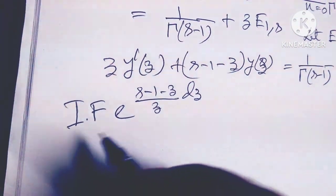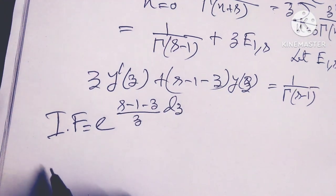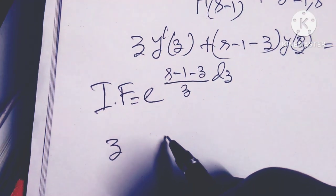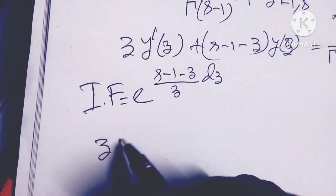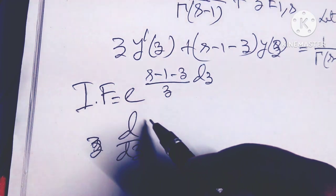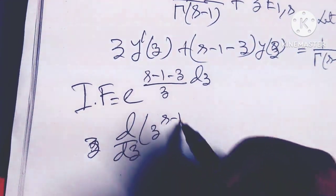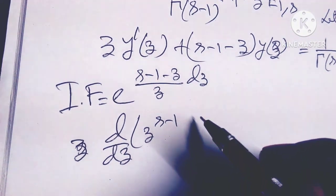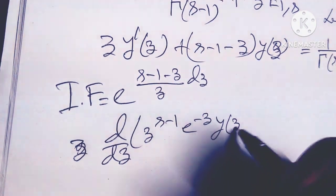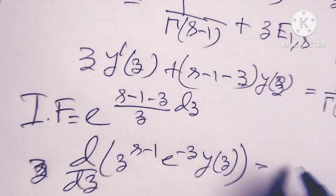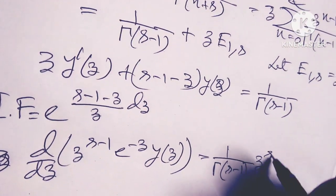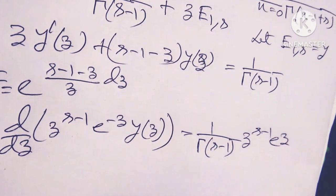Applying the integrating factor, I get d/dz of [z to the power (s minus 1) times e to the power (minus z) times y(z)] equals 1 over gamma(s minus 1) times z to the power (s minus 1) times e to the power (minus z).